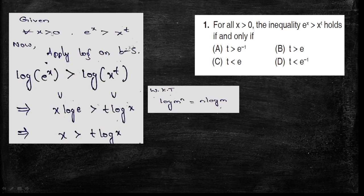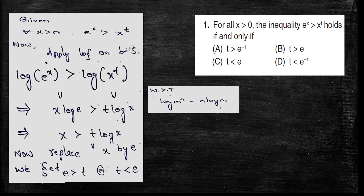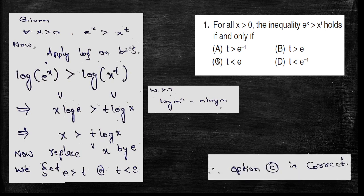Now, for all x greater than 0, in particular I am going to write about e. I take x equal to e. Clearly e is approximately 2-point-something which is greater than 0, so x equals e. We get that x is greater than t, or t is less than e. Therefore, option C will be the correct answer for the first question.